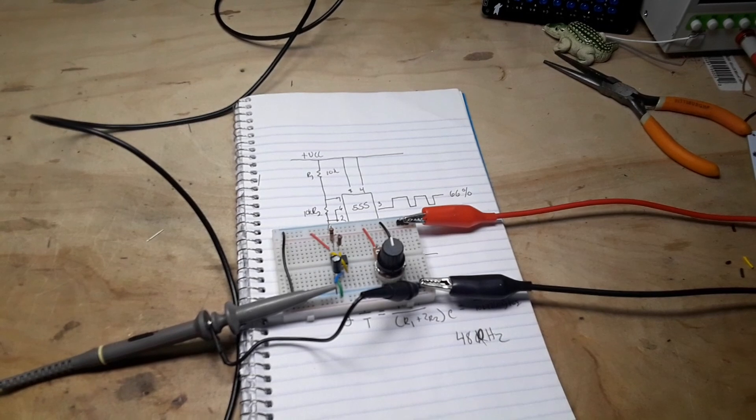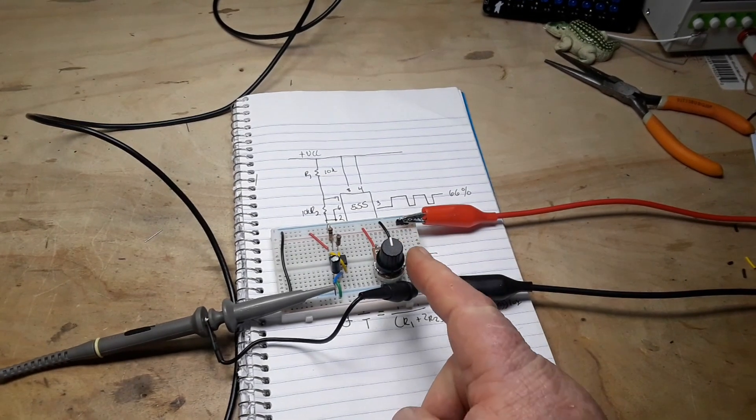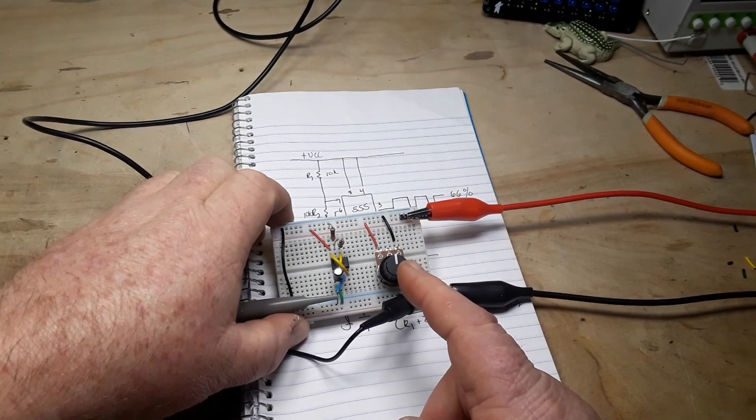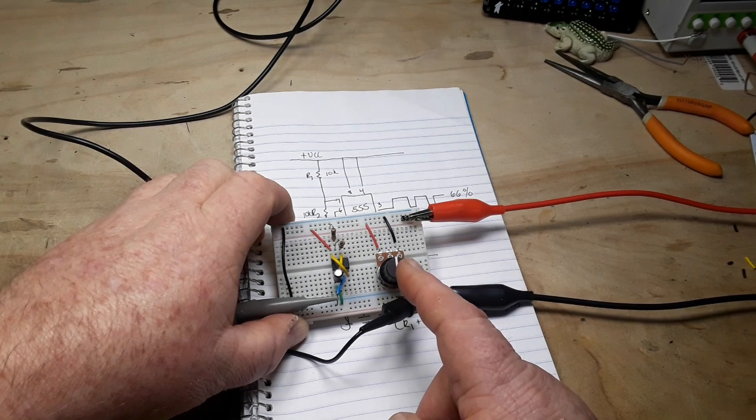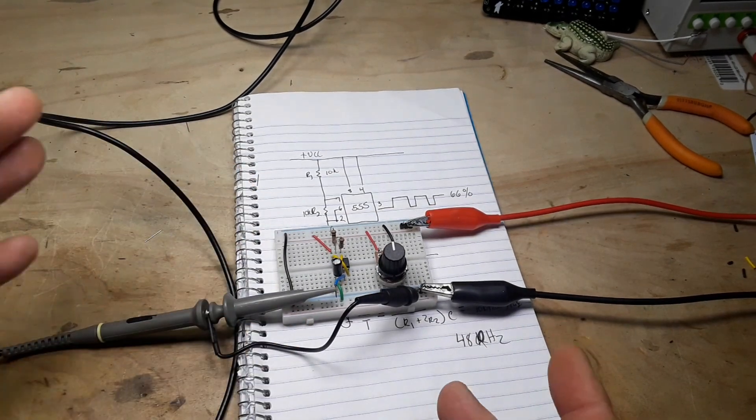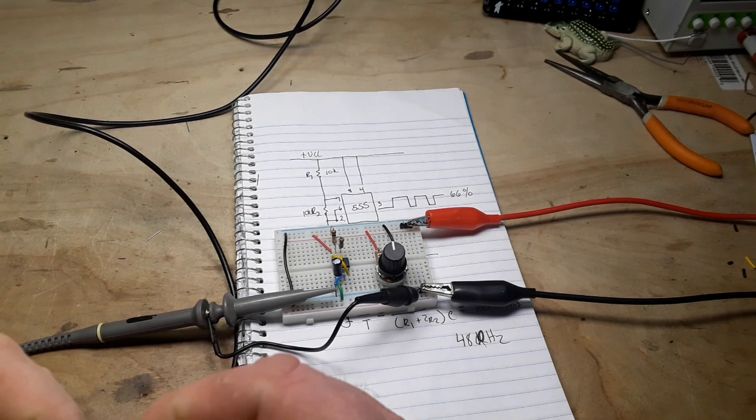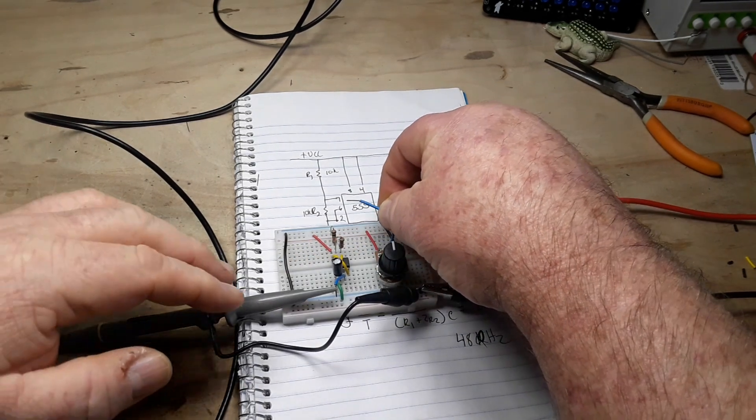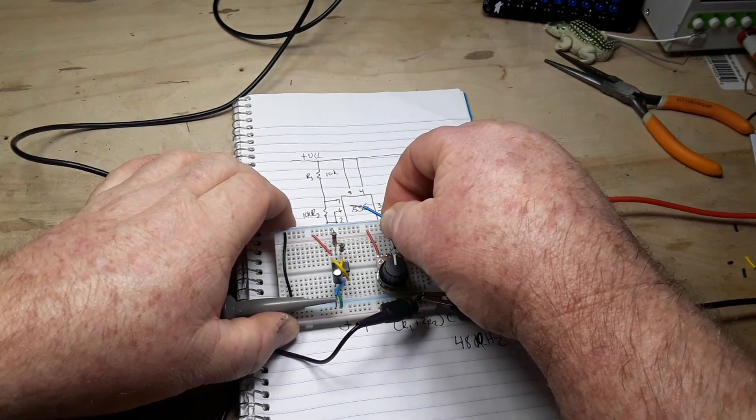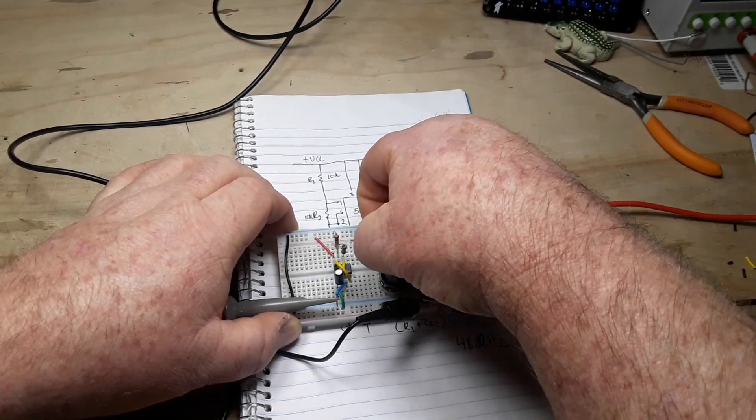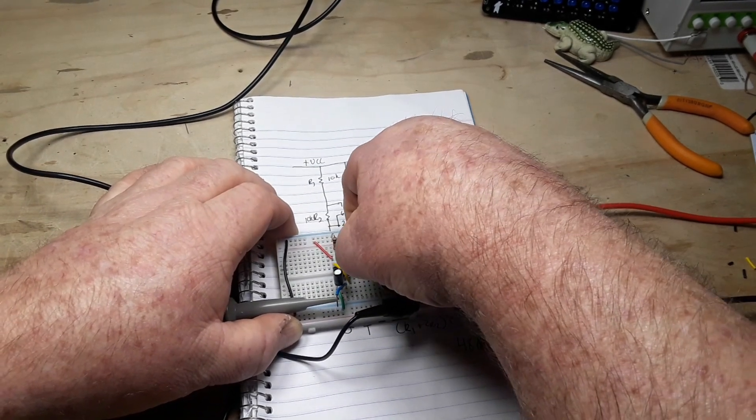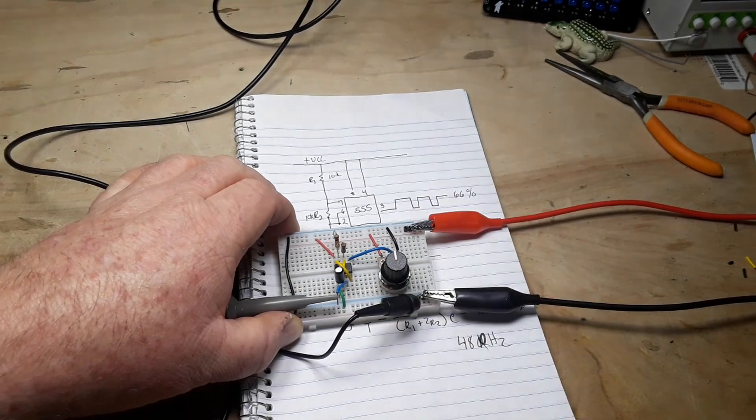Oops. So what I've done here is I simply put a potentiometer attached to VCC and ground. It's a 50k potentiometer, it's logarithmic but it really doesn't matter. What I'm going to do now is I'm going to attach the wiper from the potentiometer to pin 5, which is our control voltage pin.